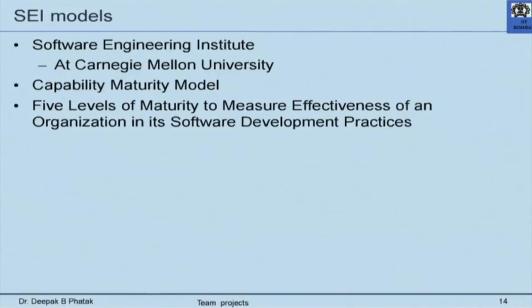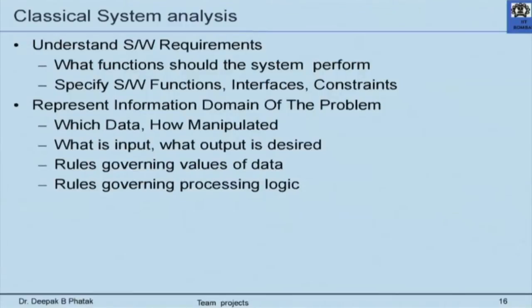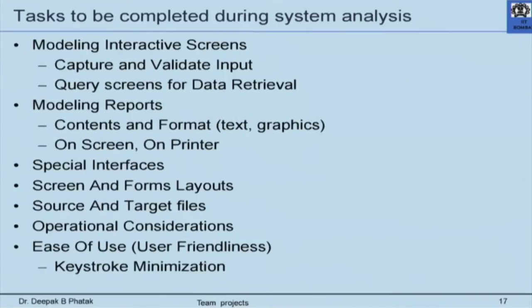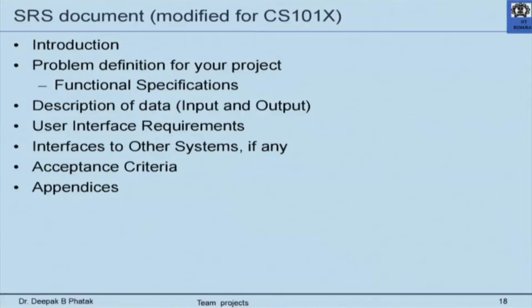We briefly describe the SDLC models, the capability maturity model, and classical system analysis. We tell students the tasks to be completed during system analysis, since these are roughly the tasks they will have to do for their chosen project. We then tell them the standard software requirement specification document is modified for our CS101X course — CS101X is the name of the course we also offer on MOOCs.